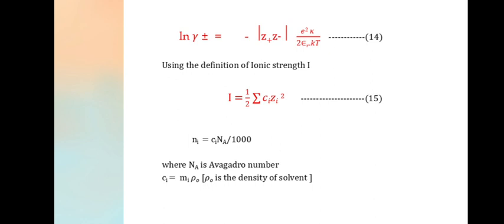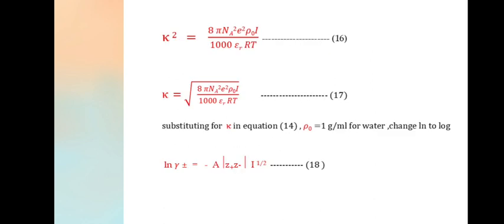Ni = CiNA/1000, where NA is Avogadro number. Ci = Mi·ρ0, where ρ0 is density of the solvent. κ² = 8πNA²e²ρ0I/(1000εRkT).